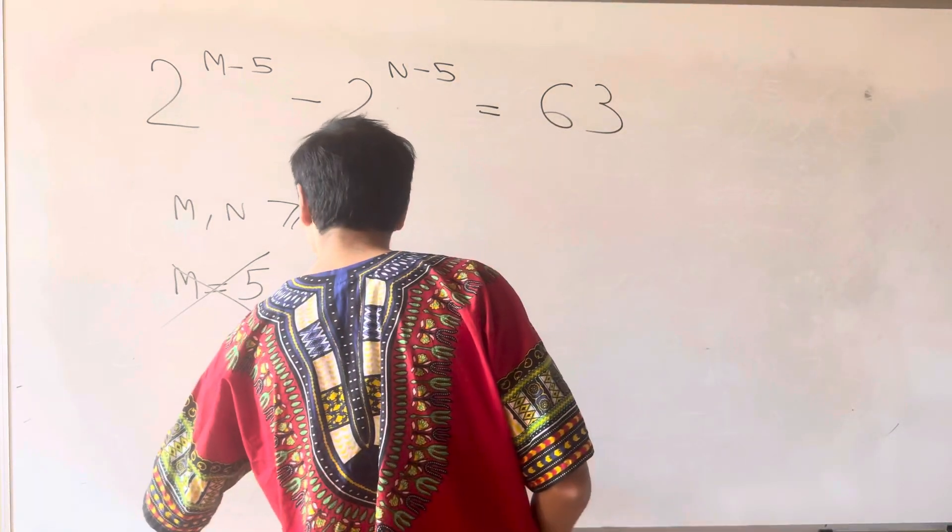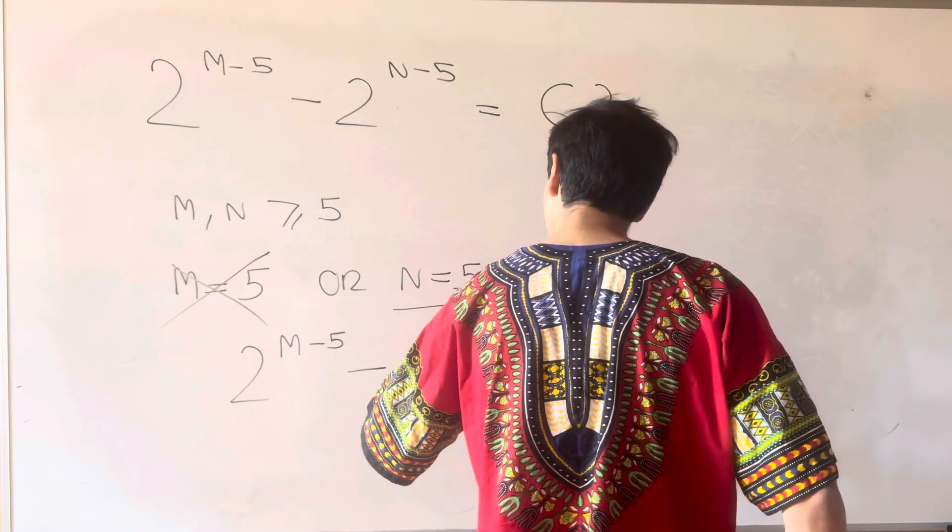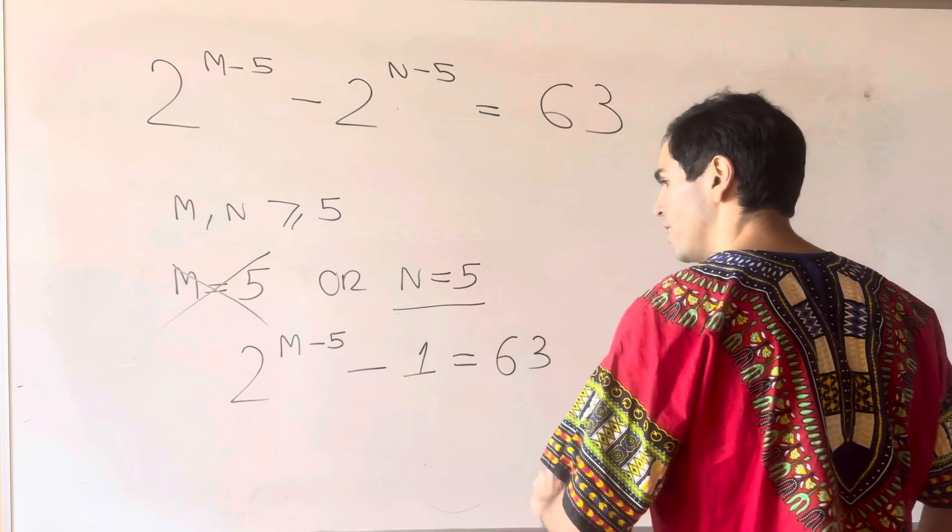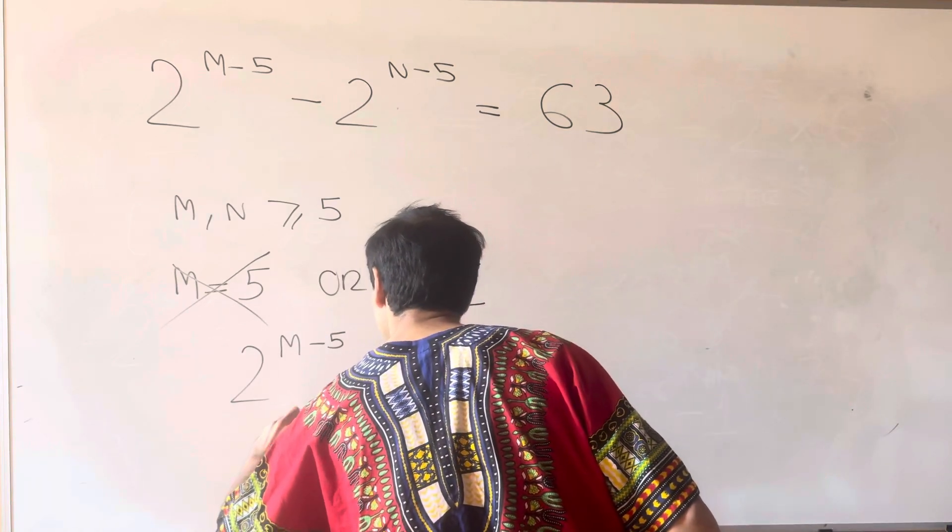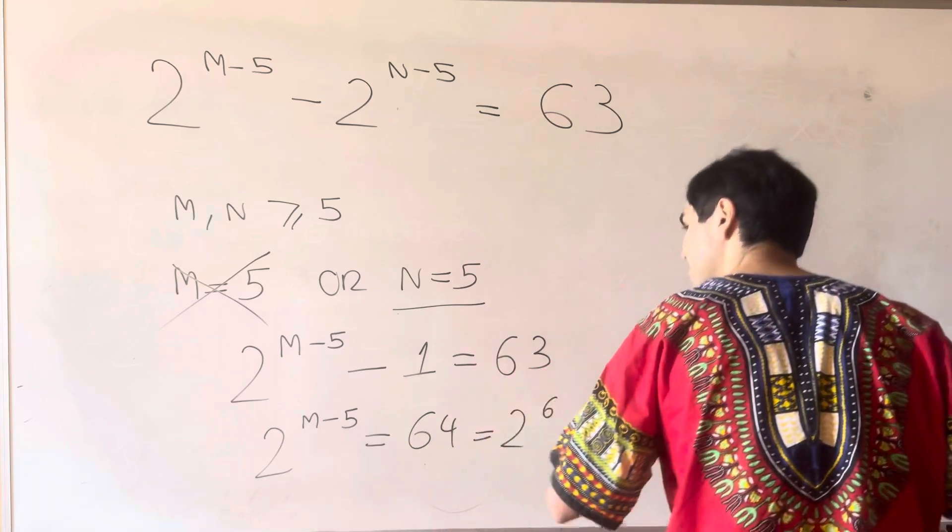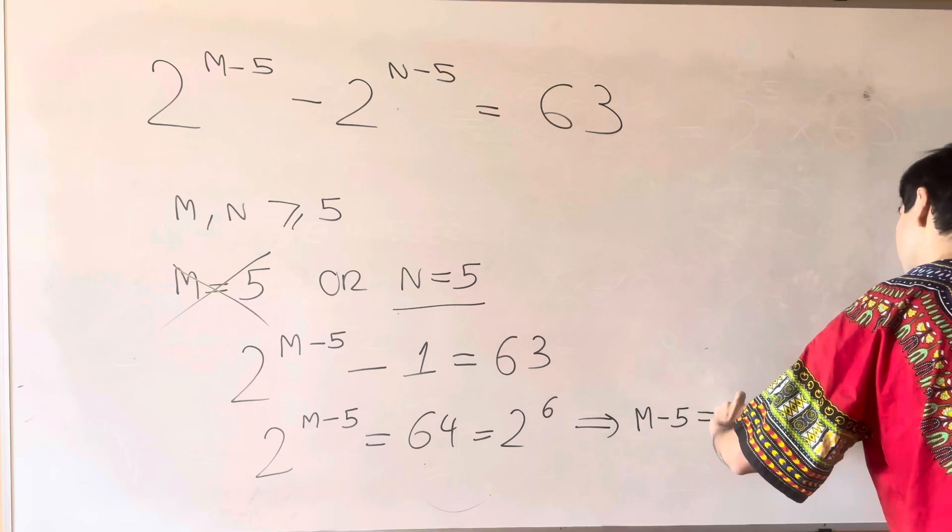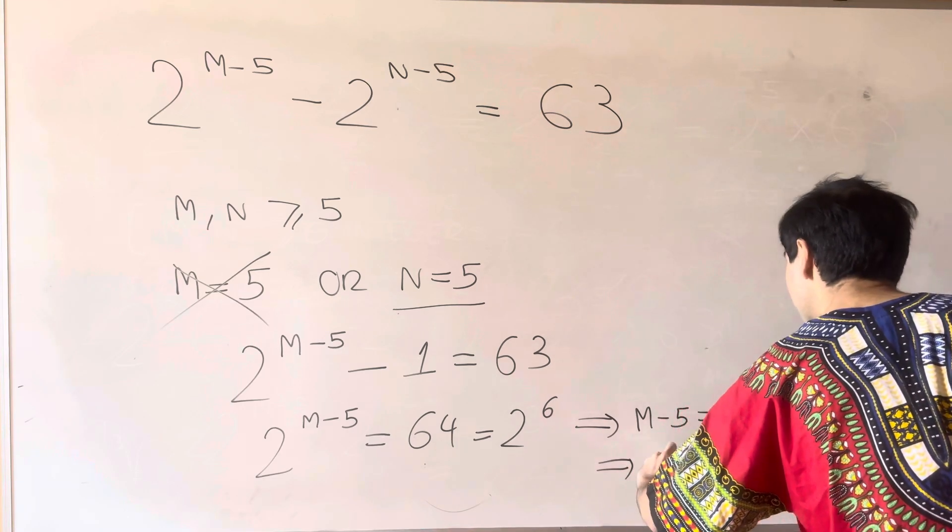And so we just need to solve 2 to the m minus 5 minus 1 is 63. And so 2 to the m minus 5 is 64, again which is 2 to the 6. So m minus 5 is 6, and so m is 11.